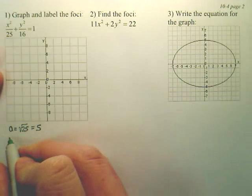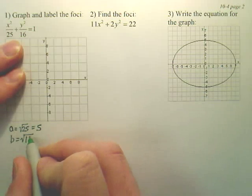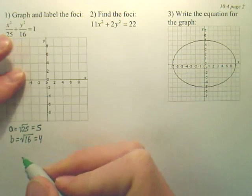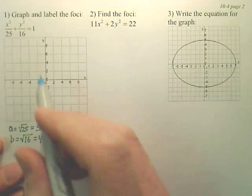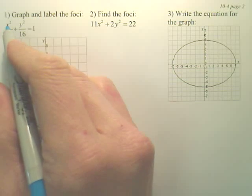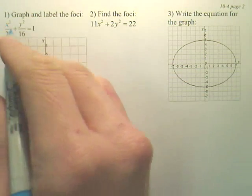Now b is going to be the square root of the smaller denominator, which is the 16, which is 4. Now those are your two major points. So if I want to graph this, the 25 came from the x, so what that means, the square root of 25 is 5, from the x.